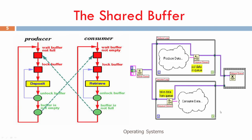Looking at the diagram: the producer will wait for the buffer to be not full — that is the first orange block. If the buffer is not full, it goes across the orange block, locks the buffer, deposits something, then unlocks the buffer. If the buffer is not empty, it triggers a signal and goes back. The first orange box waits until the buffer is not full; if the buffer is full, it keeps waiting there.